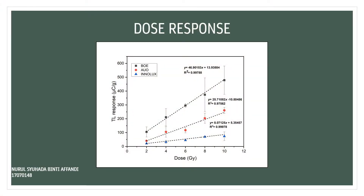First is the dose response. Dose response is important to see the linearity. It is proven that these three types give linearity and the R-squared values are above 96%. Linearity is an important criterion because efficient and dependable thermoluminescent dosimeters should result in a linear relationship across a wide range of doses. We can see that BOE is the highest among the three types of sample.